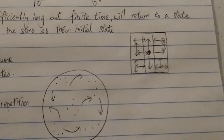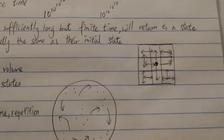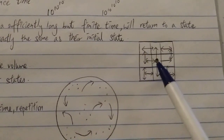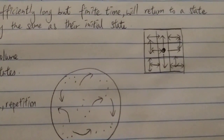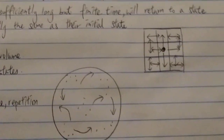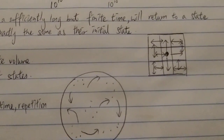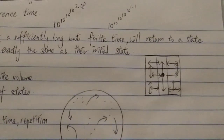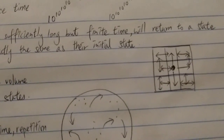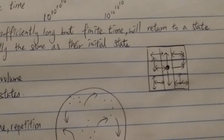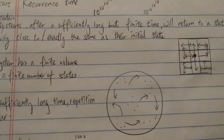After a certain finite amount of time, he will eventually return to the middle location. After a finite amount of time — it could be very long, but still finite — that person will eventually return to the middle position, assuming he just moves around randomly. The same rules apply when you apply this to our universe: after a sufficiently very long time, our universe will return to its initial state.